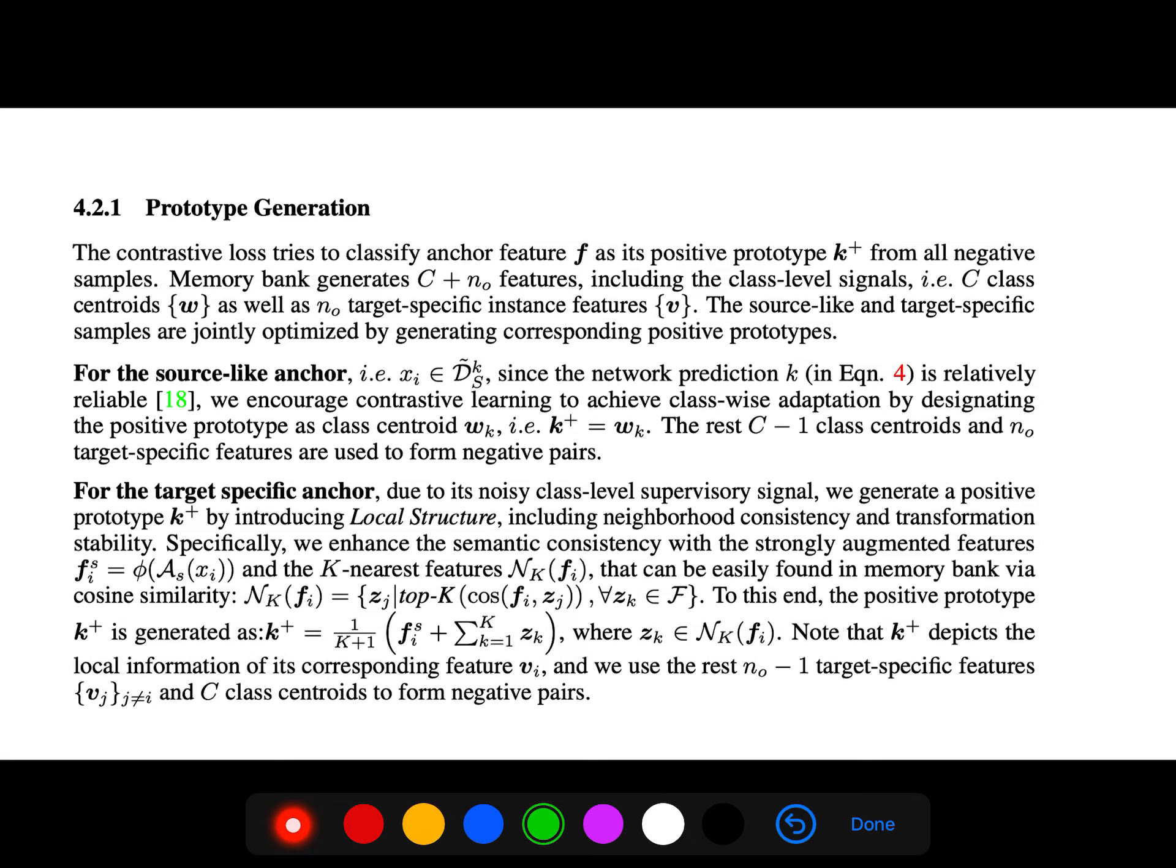For the target-specific anchor with noisy class-level supervisory signal, we generate a positive prototype by introducing local structure including neighborhood consistency and transformation stability. Specifically, we enhance semantic consistency with strongly augmented features and k-nearest features that can be easily found in the memory bank via cosine similarity.